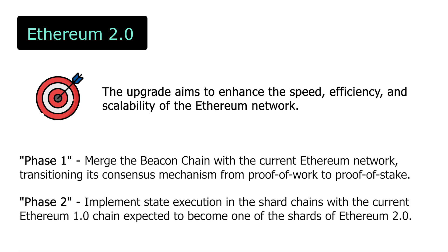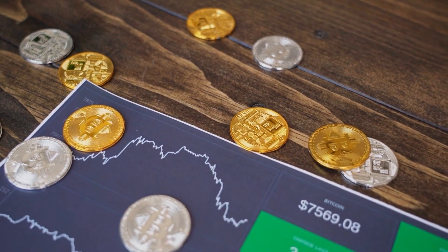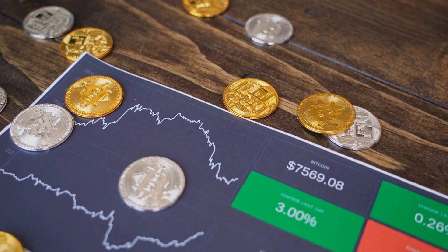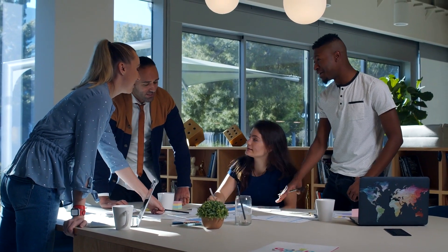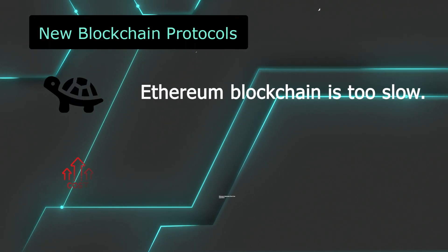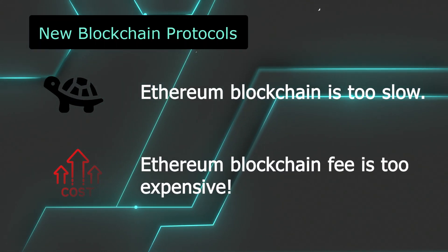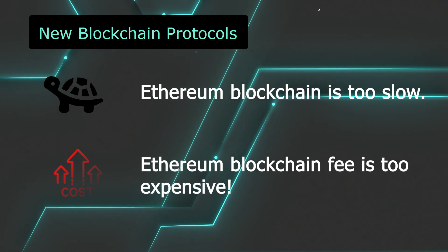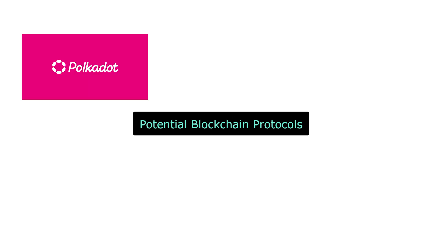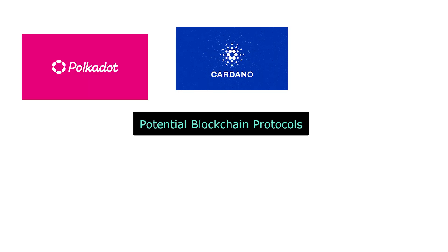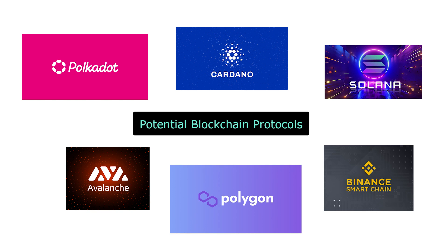Blockchain history and evolution doesn't just stop with Ethereum and Bitcoin. New projects have also sought to address some of the deficiencies of Bitcoin and Ethereum, while introducing new features by leveraging blockchain technologies. Some of the notable blockchain projects that could potentially be extremely successful are Polkadot, Cardano, Solana, Avalanche, and many more.